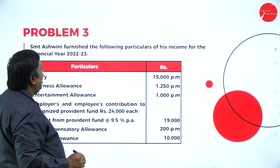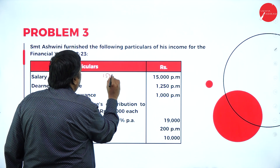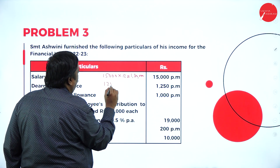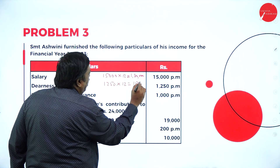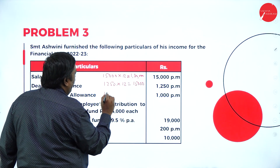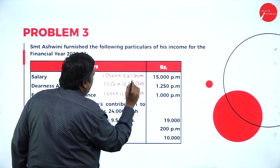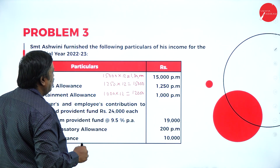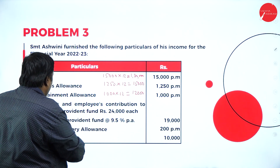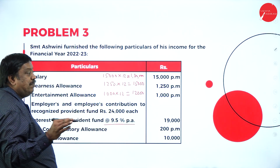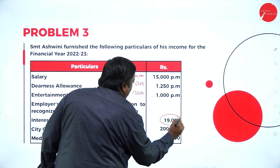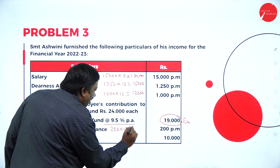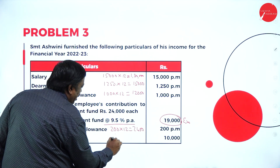Third problem: I received salary of fifteen thousand per month — fifteen thousand into 12 equals one lakh eighty thousand. DA is one thousand two hundred and fifty per month — twelve fifty into 12 equals fifteen thousand, fully taxable. Entertainment allowance: one thousand into 12 equals twelve thousand. Employer and employee both contributed twenty-four thousand each to a Recognized Provident Fund. Interest from provident fund — up to 9.5% per annum is exempted, so the total interest received is exempted. City compensatory allowance: 200 into 12 equals two thousand four hundred. Medical allowance: ten thousand, fully taxable.